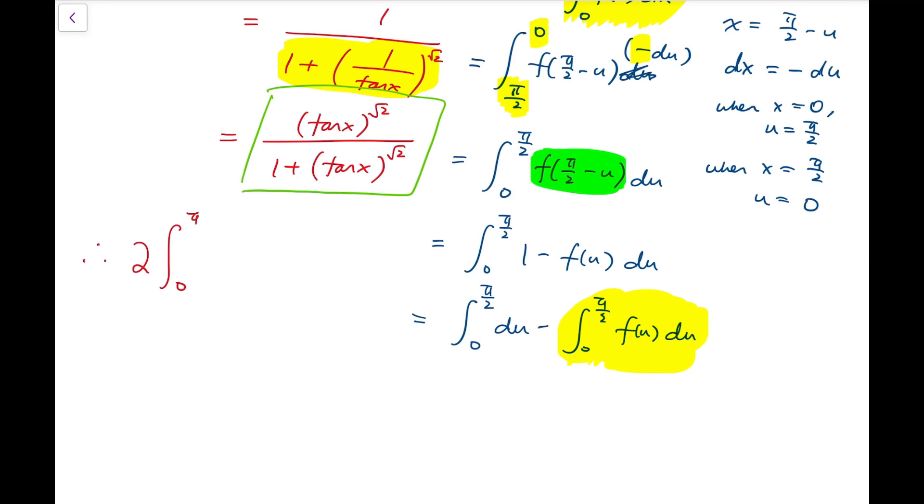So that means I can make a conclusion that, therefore, the double of our original integral is exactly equal to pi over 2. Because integrating 1 would only give u, and so from 0 to pi over 2, the entire definite integral would be exactly pi over 2. So that means our final answer is just half of pi over 2. That means it's pi over 4. This is our final answer.